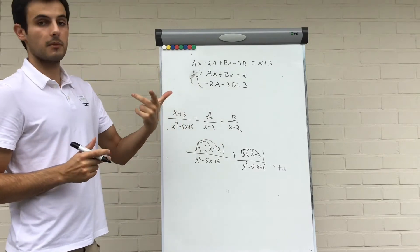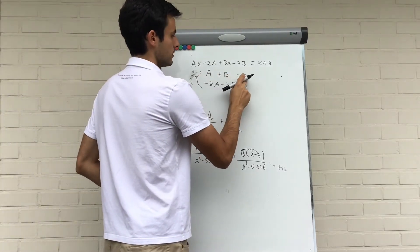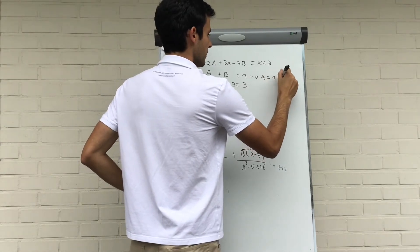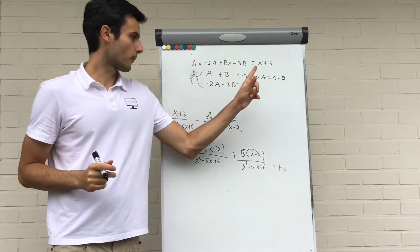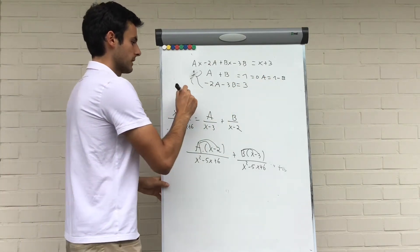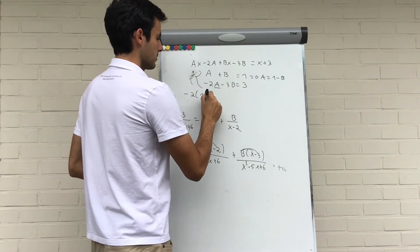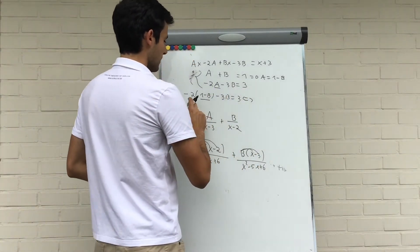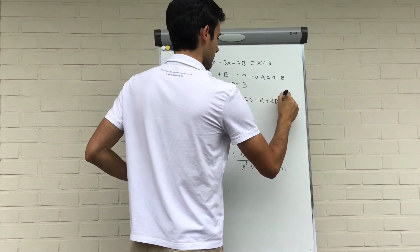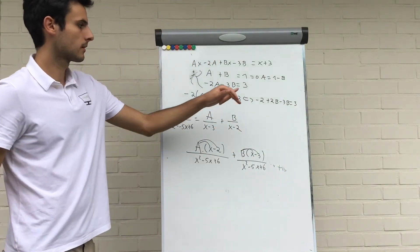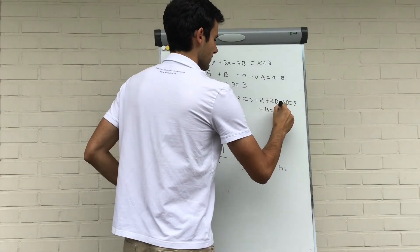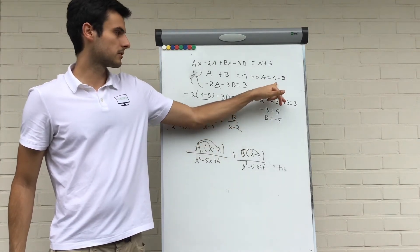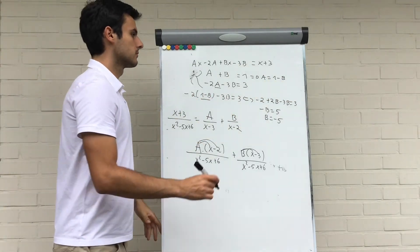From the first equation, dividing by x gives A plus B equals 1, so A equals 1 minus B. Substituting into the second equation: minus 2(1 minus B) minus 3B equals 3, which gives minus 2 plus 2B minus 3B equals 3, so minus B equals 5, meaning B equals minus 5. Then A equals 1 minus (minus 5) equals 6.